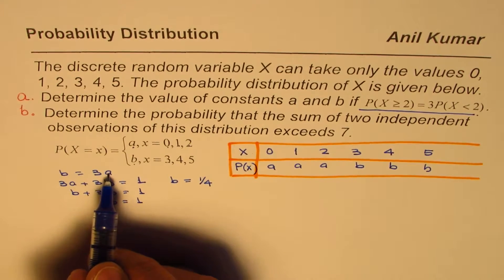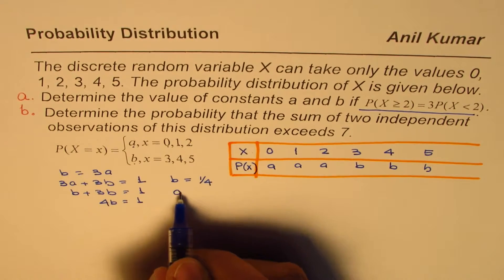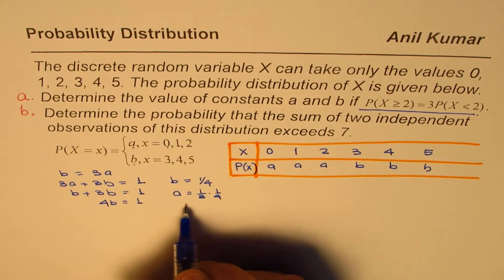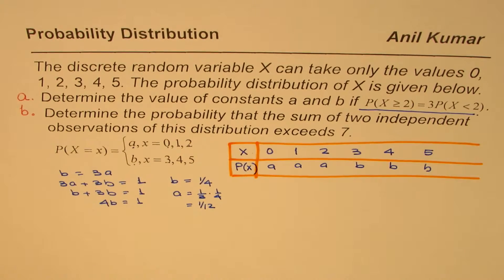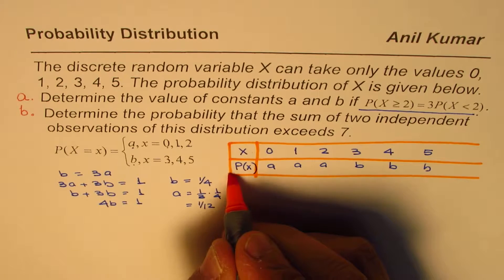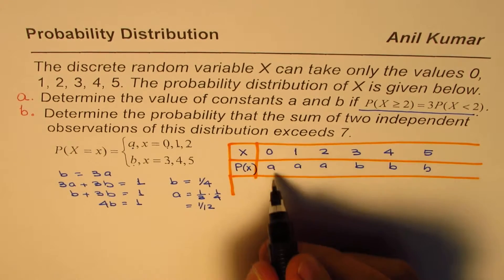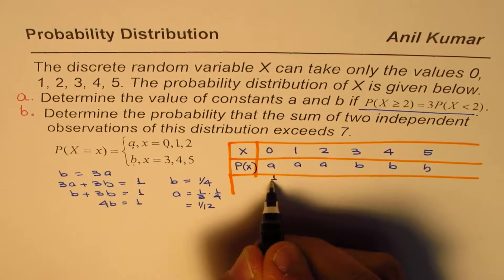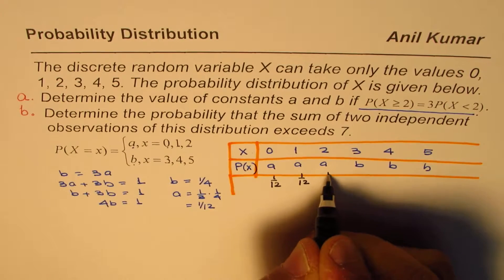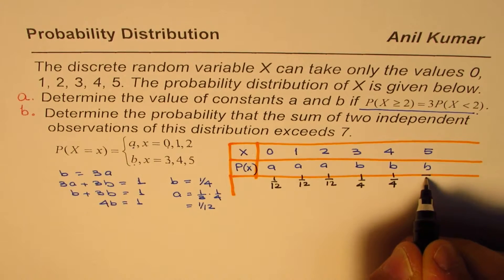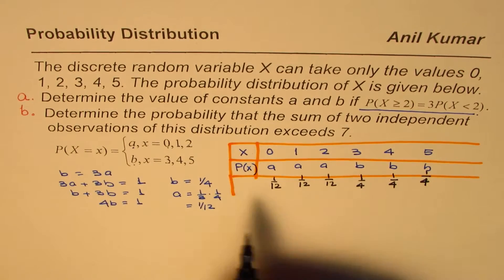And that gave us the value of B as equal to 1 over 4. Now B is 1 over 4, so what is A? A is 1 third of 1 over 4, 1 third of B. So A is 1 over 12. So we found these values. Description is there in the videos which I have shown just now. So what I will do here is, in fact, let me just write these values in the probability distribution table. So here we'll write A as 1 over 12. These are 1 over 12. And B's are 1 over 4, 1 over 4. So that is their probability.